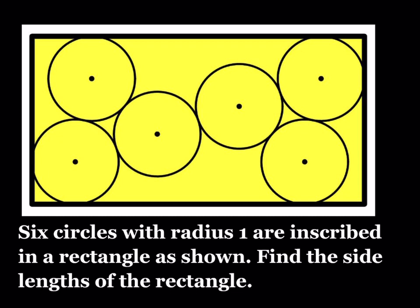So we have six circles with radius 1 inscribed in a rectangle as shown. Find the side lengths of the rectangle.